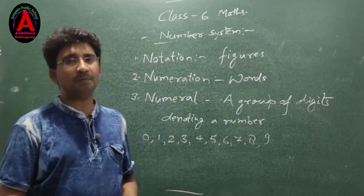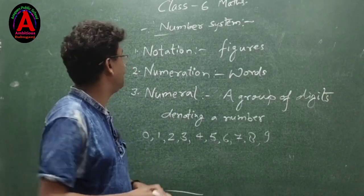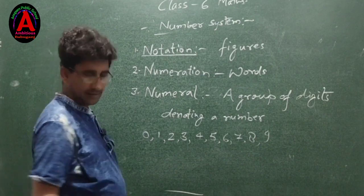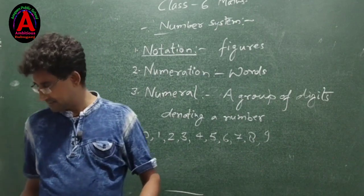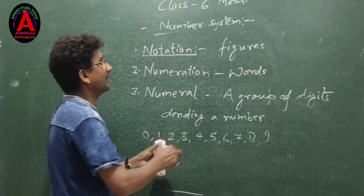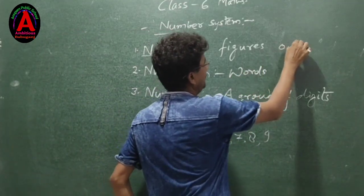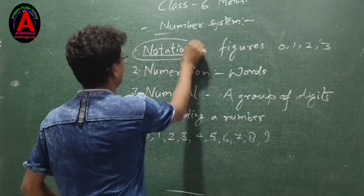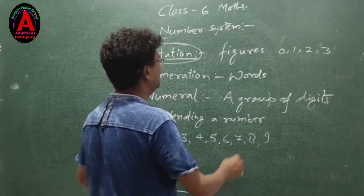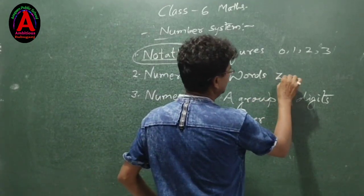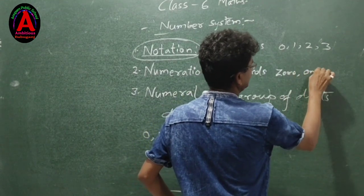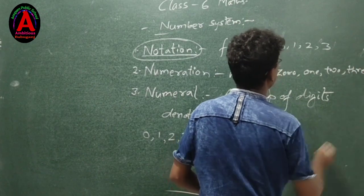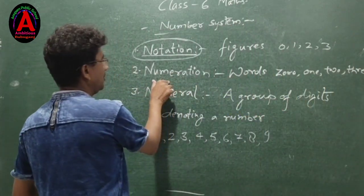Now next we will talk about face value and place value. Notation is writing a number in figures, as 0, 1, 2, 3 — these are notation. In words, as zero, one, two, three — these are the numerals.